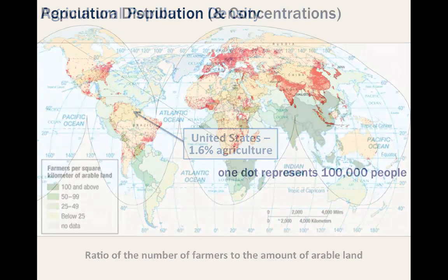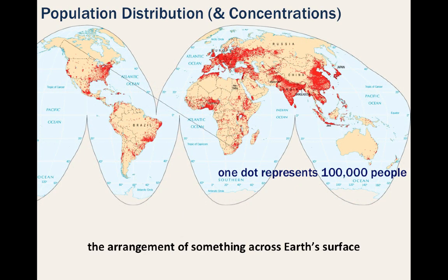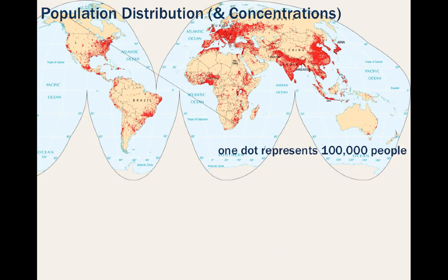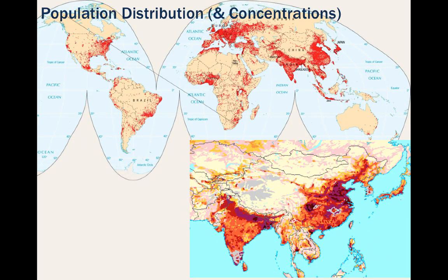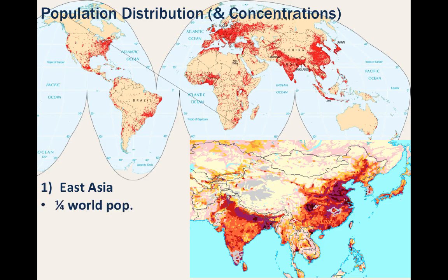Distribution is the arrangement of something across Earth's surface, and in this unit we are obviously concerned with the distribution and concentration of people. The greatest concentration of people is in East Asia, including countries like China, Japan, the Koreas, and Taiwan. Around a fourth of the world's population resides here, and you can see ribbon-like extensions of population density along fertile river valleys, giving you a strong indication of people's livelihoods.